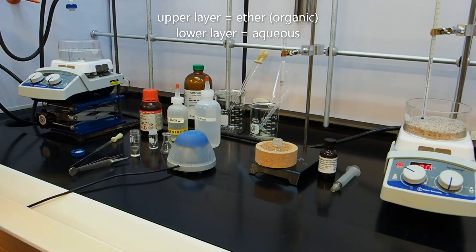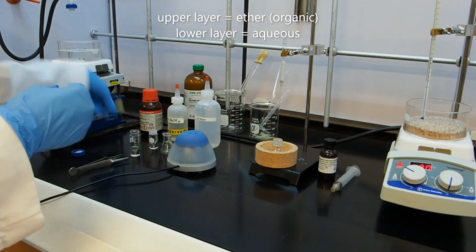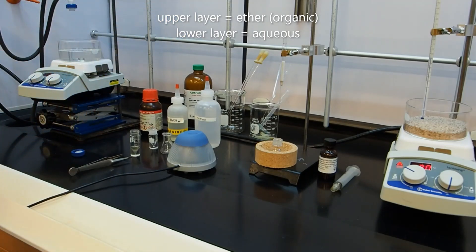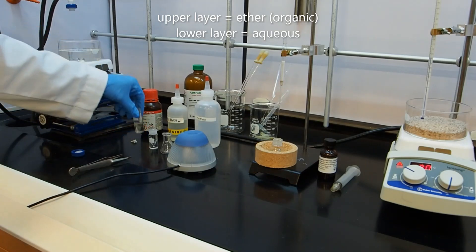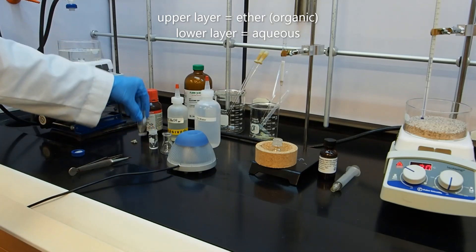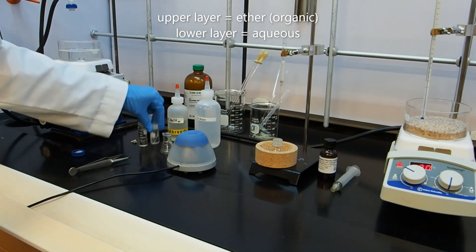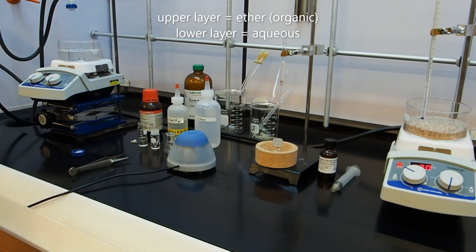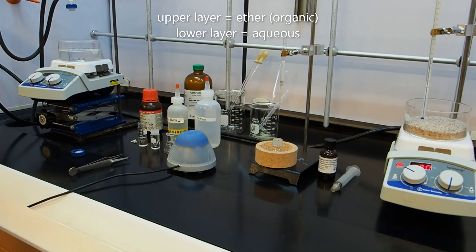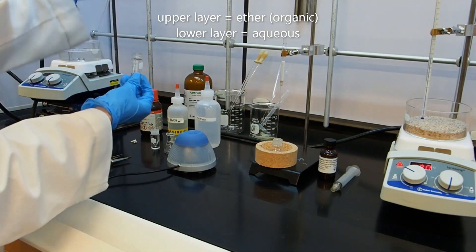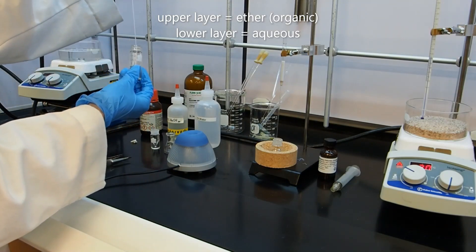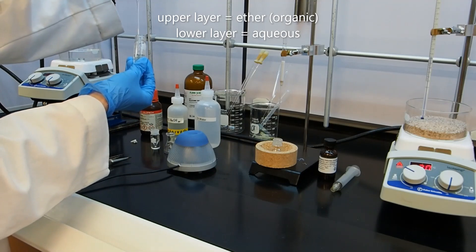We're going to use a Pasteur pipette, which I have right here, to transfer the lower heavier aqueous layer into a small conical vial. So it's kind of clever here that we have a five mil conical vial and a three mil conical vial. So I'm going to move the lower layer.